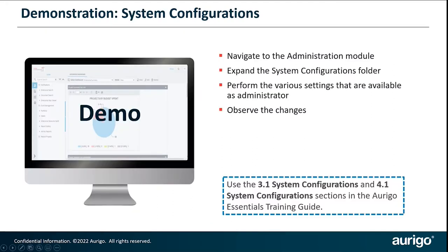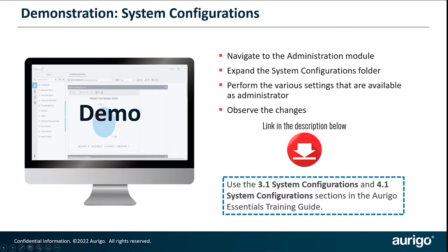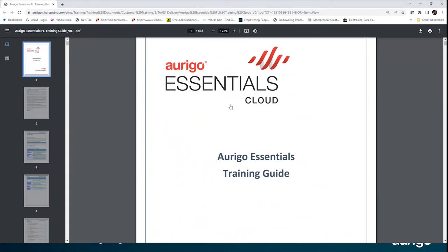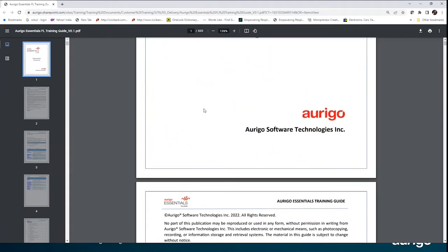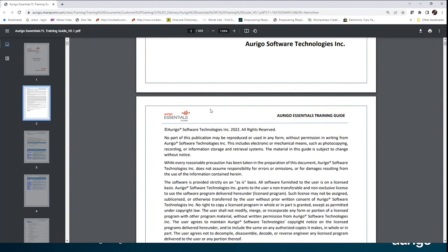In this slide, you are seeing three elements: one is the visual representation, then some bullet points that talk about what exactly I'm going to demonstrate as a trainer, and the box at the bottom right, which is a reference to the training guide.